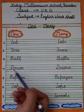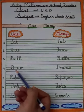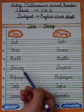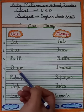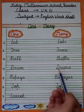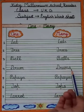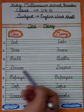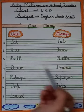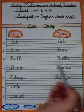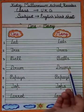Number four is d-r-u-m, drum. And many of drum is d-r-u-m-s, drums. Ek drum — ek se zyada drums.